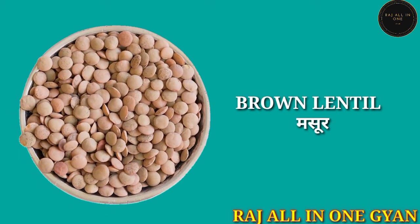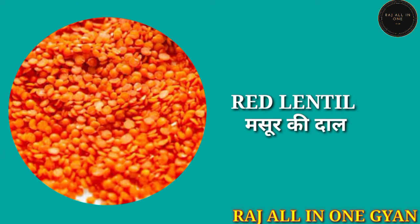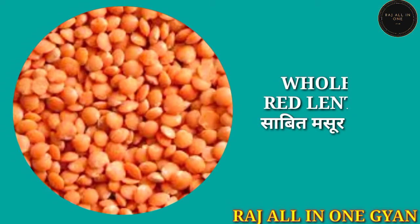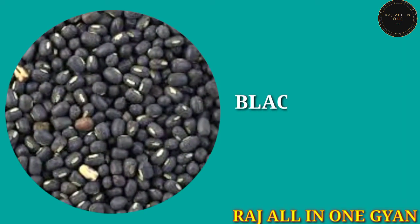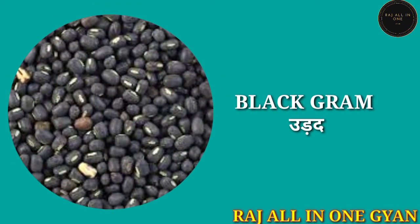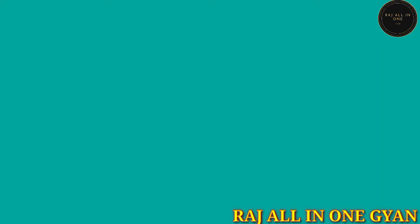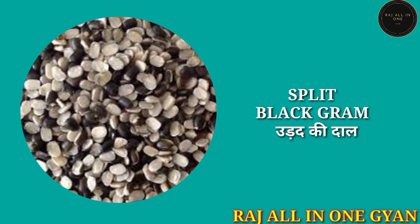Brown lentil — Masoor. Red lentil — Masoor ki daal. Whole red lentil — Sabut masoor daal. Black gram — Urad.